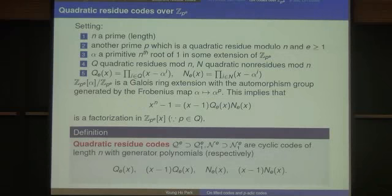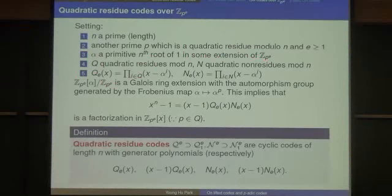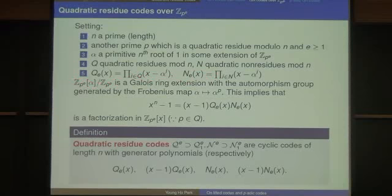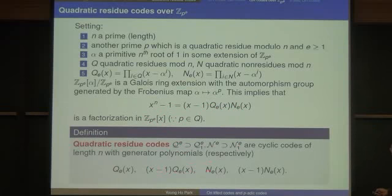The settings for quadratic residue codes over Z/p^e are exactly the same as before. N is the prime length, p is another prime which is a quadratic residue mod N, and alpha is an N-th root of unity in some extension of Z/p^e. Q and N are the same sets, and Q_e(x) is defined by the same formula. Because this ring over Z/p^e is a Galois extension with Galois group generated by the Frobenius, this factorization is again valid in Z/p^e, so Q(x) and N(x) are polynomials in Z/p^e.